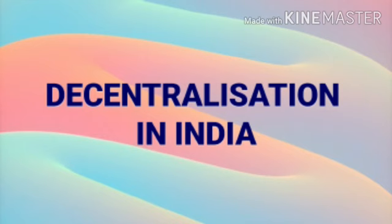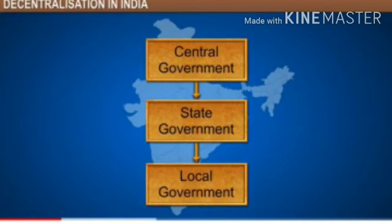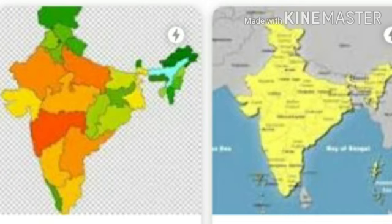We all know that a federal government has two or more than two tiers of government. We have so far discussed two tiers: central government and state government. But a vast country like India cannot be run only through these two tiers.